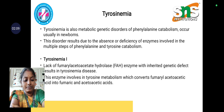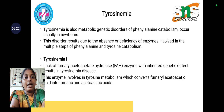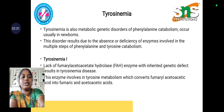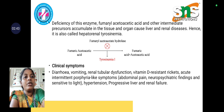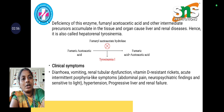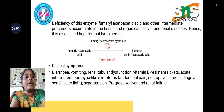Tyrosinemia Type 1 mainly lacks the fumarylacetoacetate hydrolase enzyme (FAH), and this inherited genetic defect results in the disease. This enzyme is involved in tyrosine catabolism, converting fumarylacetoacetic acid into fumaric acid and acetoacetic acid. You can see in the equation: fumarylacetoacetic acid is converted into fumaric acid plus acetoacetic acid by fumarylacetoacetate hydrolase. When this enzyme is defective or deficient, it leads to the accumulation of fumarylacetoacetic acid in tissues and organs, finally leading to liver and kidney disease.